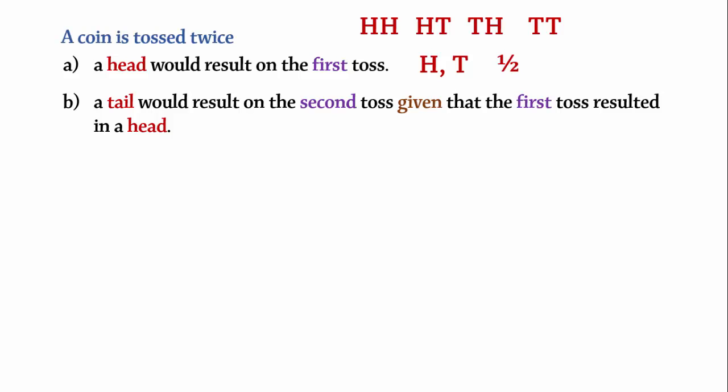Part B. What is the probability that a tail would result on the second toss given that the first toss resulted in a head? If the first toss resulted in a head, there are only two ways this could happen: head-head or head-tail. Since the second toss resulted in a tail in only one of these outcomes, HT, the probability is 1/2.